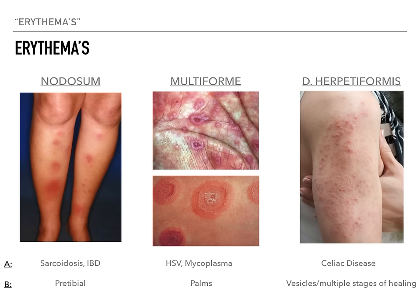Erythema multiforme is associated mostly with herpes simplex virus, but also a little bit with mycoplasma pneumoniae. I would really pay attention to HSV. The buzzword is that it's going to be on the palms — it can also be on the chest — but most of the time they're going to give you a patient with a history of herpes who all of a sudden has this rash on the palms. The answer is erythema multiforme.